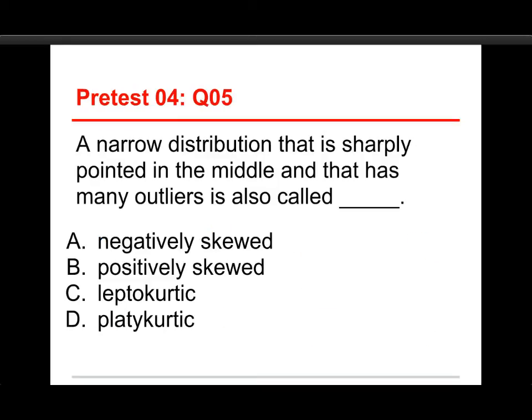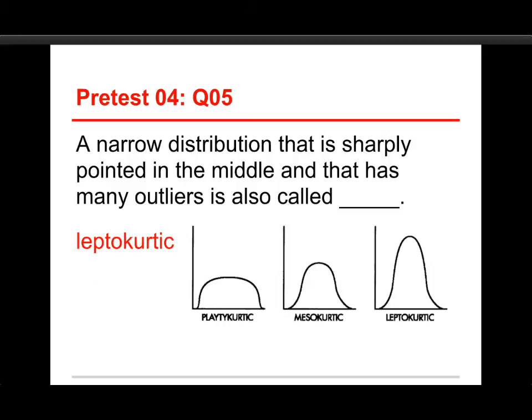Fifth question: a narrow distribution that is sharply pointed in the middle and has many outliers is also called? The choices are negatively skewed, positively skewed, leptokurtic, or platykurtic. The answer is leptokurtic — lepto means thin or narrow, and kurtic means a bulge. In the illustration, on the left we have a platykurtic or relatively flat distribution, the mesokurtic or normal distribution is in the middle, and the leptokurtic is on the far right with a very narrow top and long tails with many outliers.